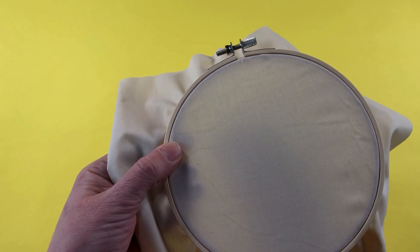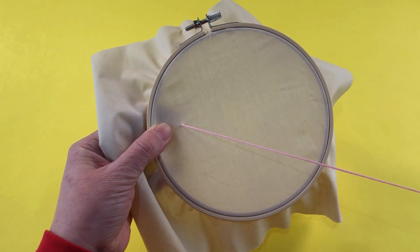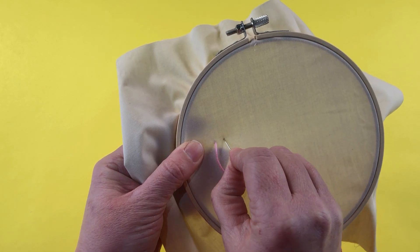To get started we're going to push our needle up through the back of the material and then we're going to do a small length stitch.